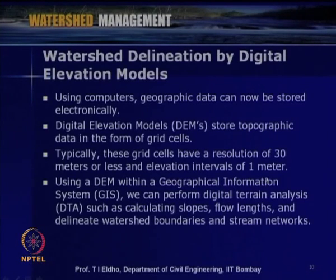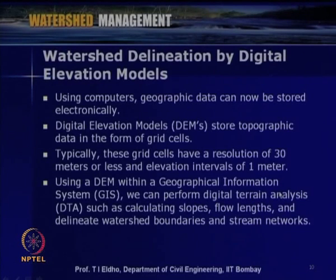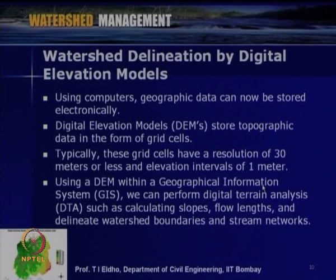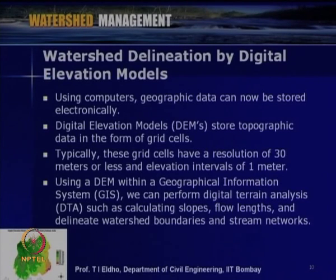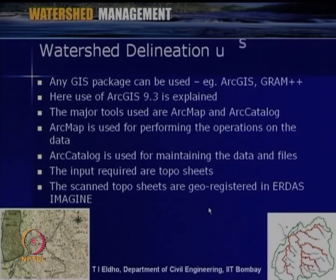Using a DEM within a GIS, we can perform digital terrain analysis (DTA) to calculate slopes, flow lengths, and delineate watershed boundaries and stream networks. This is now widely used by most hydrologists. If we have access to GIS software and better contour intervals, we can easily generate a digital elevation model and then perform various digital terrain analysis. This figure shows a digital elevation model for a sample watershed, showing the variation of elevation within the watershed.